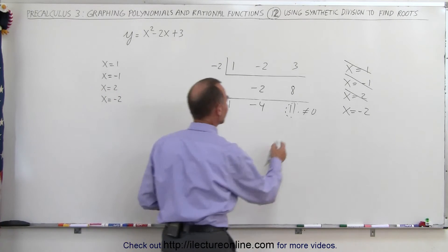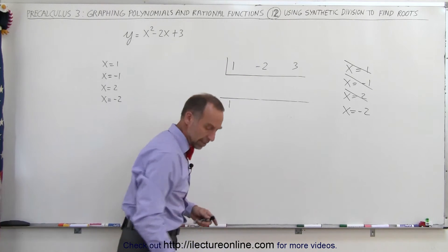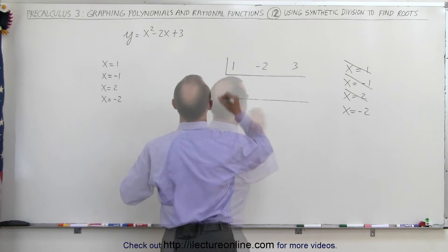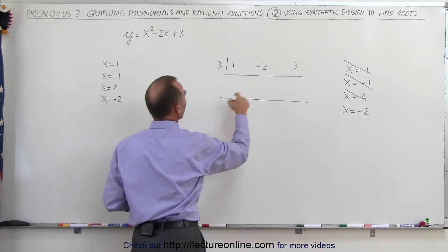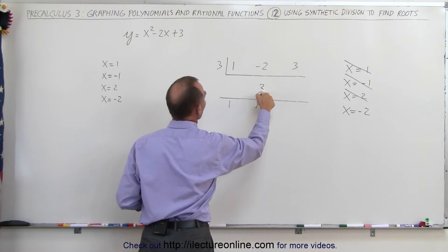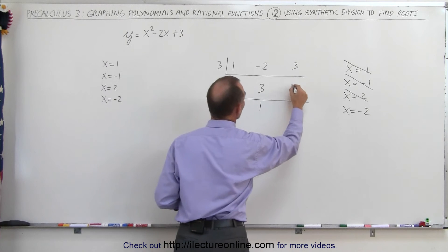Alright, let's try a few more. So now we're going to try a positive 3 and see what happens. Positive 3, we drop the 1, 3 times 1 is equal to 3. Negative 2 times a plus a 3 is a positive 1. 3 times 1 is 3, add it together, you get a 6.